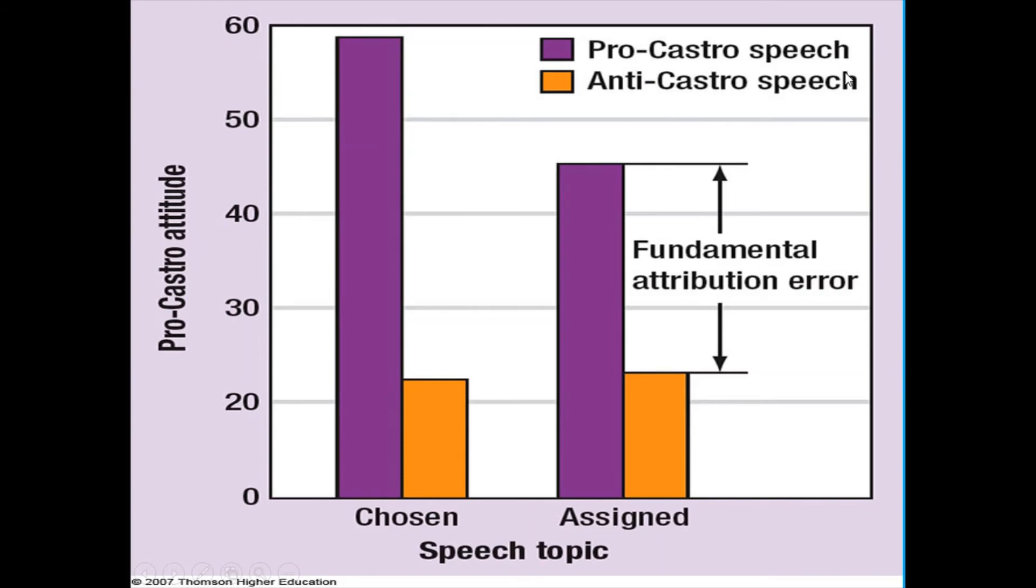After reading this person's speech, the participants are asked, what do you think is the underlying attitude of the speech writer towards Fidel Castro? On the left side of the graph, these results make sense. If someone freely chooses to write a speech in favor of Fidel Castro, that very likely tells us something about that particular person's attitude towards Fidel Castro. The same for if someone freely chooses to write a speech against Fidel Castro, that likely tells us something about their internal underlying attitude.